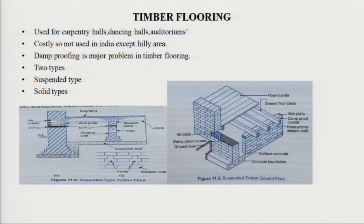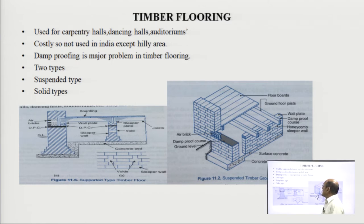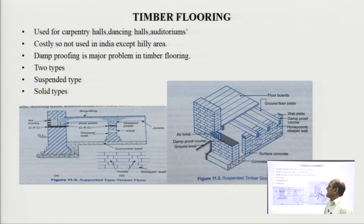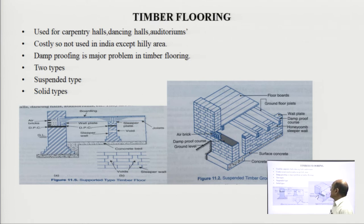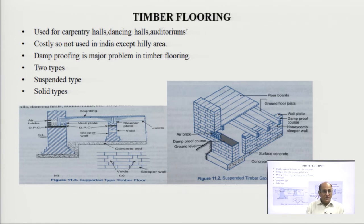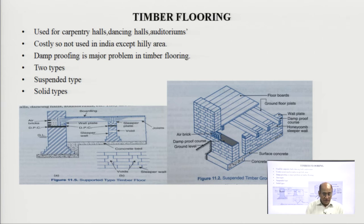Now come to timber flooring. This is used for carpentry halls, dancing halls, or auditoriums. It is very costly, so it is not used in India except in hilly regions where timber is cheaply available. Damp proofing is the major problem of timber flooring. There are two types: suspended type, where the flooring is not in contact with the ground, and solid type, in which a base is prepared over which timber flooring is made.